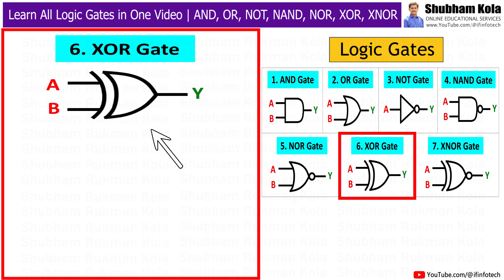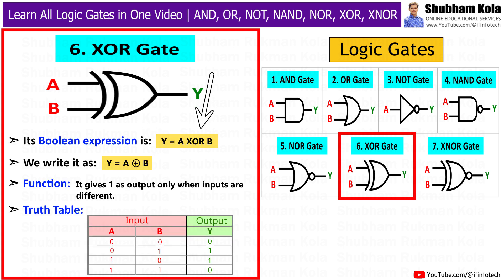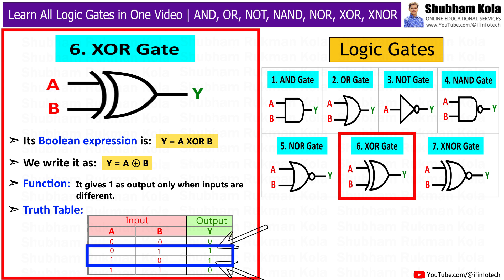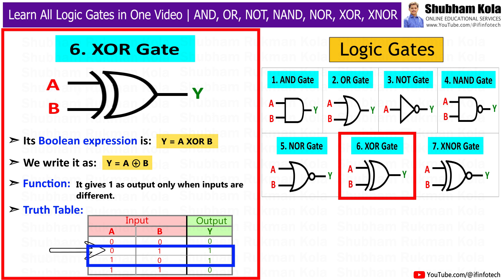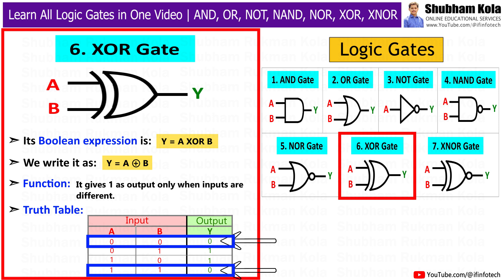The next gate is the XOR gate, also called the Exclusive OR gate. Its Boolean expression is y = A XOR B. It gives 1 as output only when the inputs are different. It looks like an OR gate with one extra curved line in front. In the truth table, if A is 0 and B is 1, or A is 1 and B is 0, the output is 1. If both inputs are the same, the output is 0.